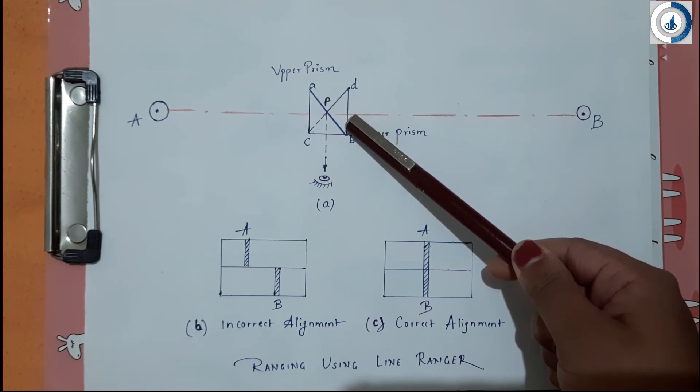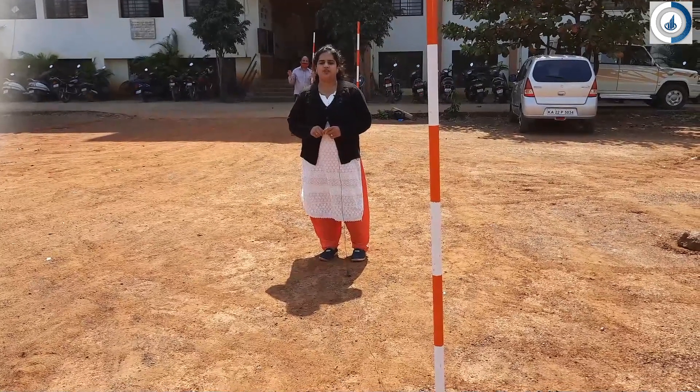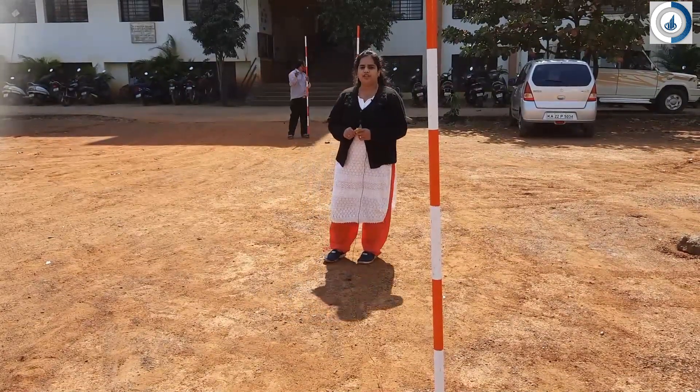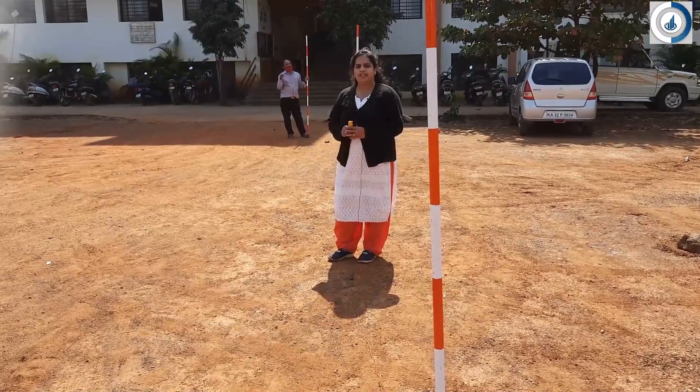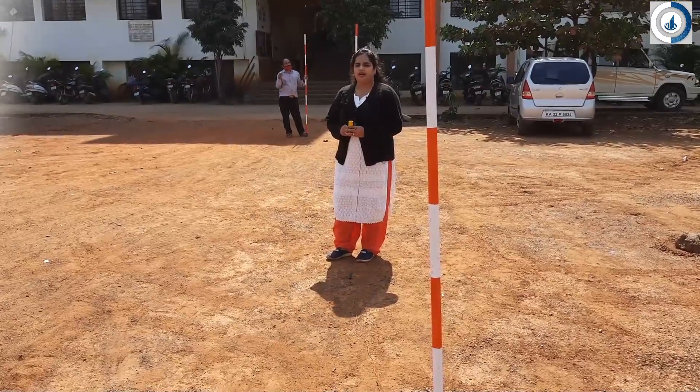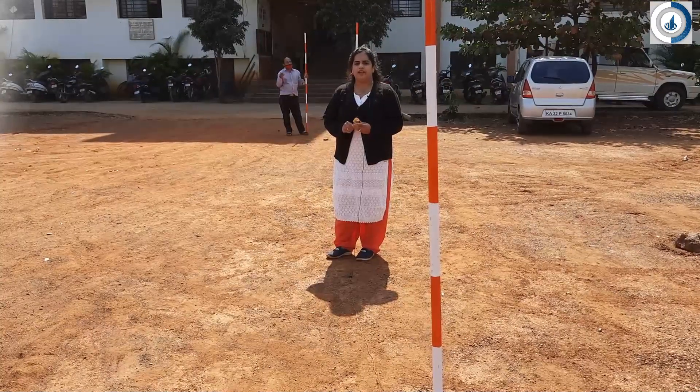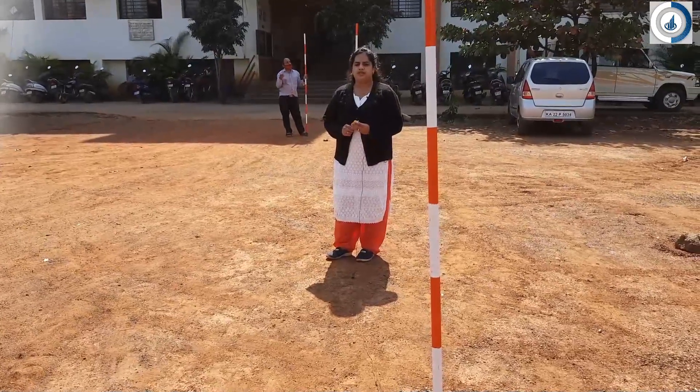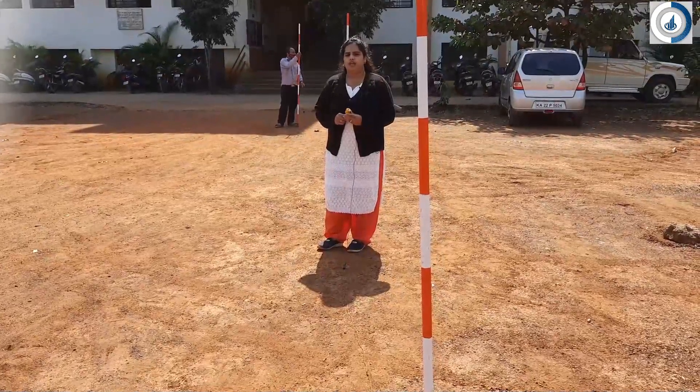This is how we can establish an intermediate point with the help of line ranger. Now we shall see how the ranging is done. Let A and B are the two end stations of the survey line. The surveyor has to hold the instrument and stand approximately in line with A and B. After that, he has to view the images of ranging rods fixed at A and B. Once these two images come in the same vertical line, the point can be transferred on the ground with the help of a plumb bob.